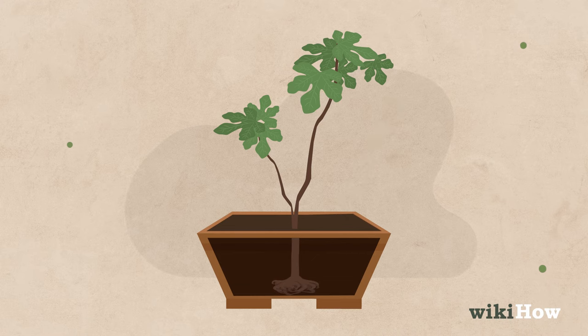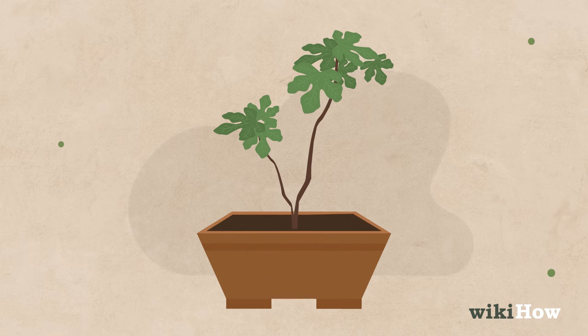Keeping the roots short and the root ball compacted near the base of the container will stunt the growth of the plant so it stays small.